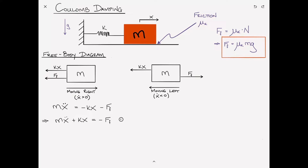The difference comes in when considering Case 2, when the block is moving to the left. Writing Newton's second law again looks very similar to Case 1 except for a sign change on the F sub F term — F sub F is now applied in the positive X direction. Rearranging gives equation two, and the key difference is that the external load is changing direction depending on the direction of motion.